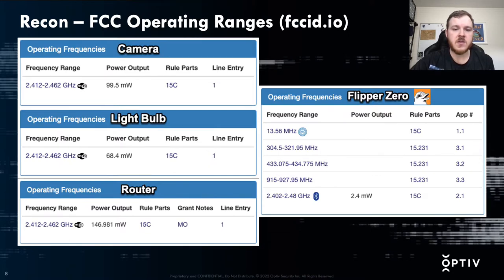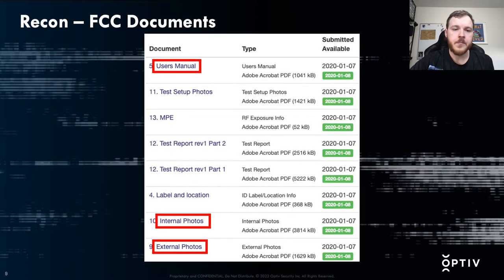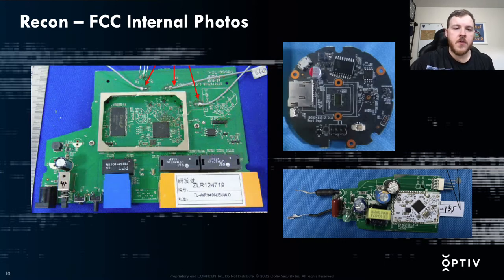When we dig into FCC IDs there's a lot of useful information we can find. My three target devices are all 2.4 GHz Wi-Fi, and I also looked at a Flipper Zero which communicates on 2.4 GHz Bluetooth, NFC, and a handful of other frequencies. You can also find internal and external photos of the device as well as user manuals in the FCC filings. The internal photos are probably the main focus — I'm looking for the main integrated circuits like the primary CPUs, as well as other peripherals you might not be able to see from the outside.